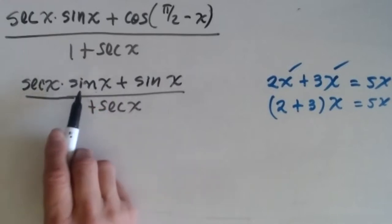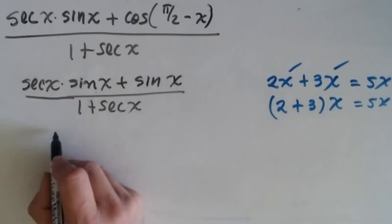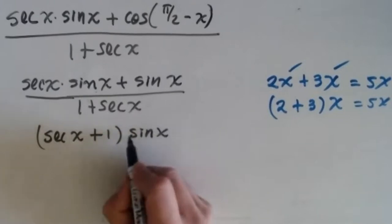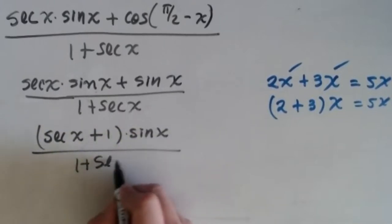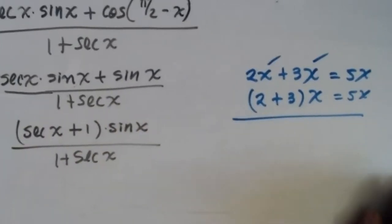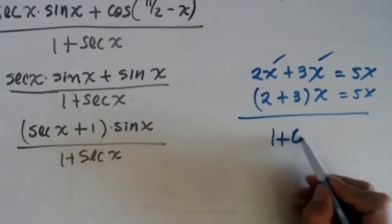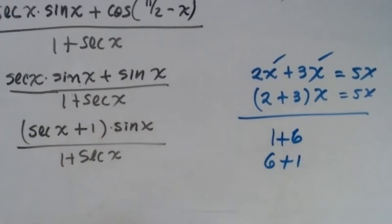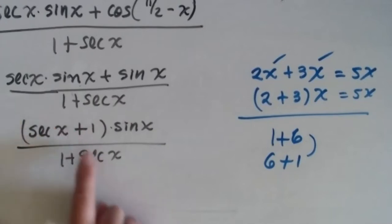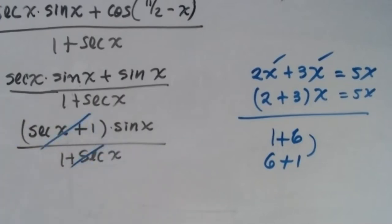Sine and sine — same as x — so I factor: (secant x plus 1) times sine x, divided by 1 plus secant x. You know from elementary school that 1 plus 6 equals 6 plus 1. What you have here: secant plus 1 and 1 plus secant — these two are the same. So I can cancel, and my answer is sine x.